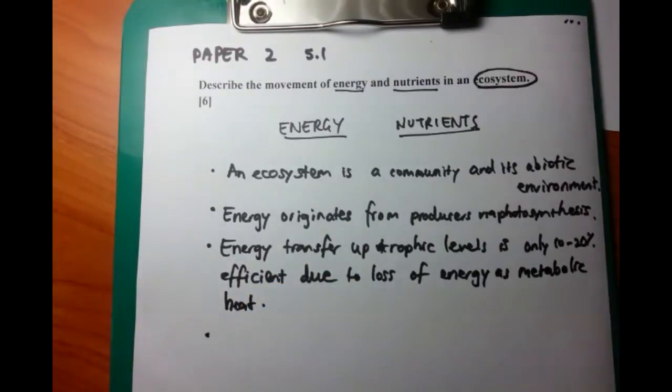Now, after this energy is made via photosynthesis, then it is transferred from plants to other organisms via consumption. And then this transfer from one level to another level is very inefficient, only 10 to 20% efficient. And this is because of loss of energy as metabolic heat, as excretion, as inefficient absorption of energy.